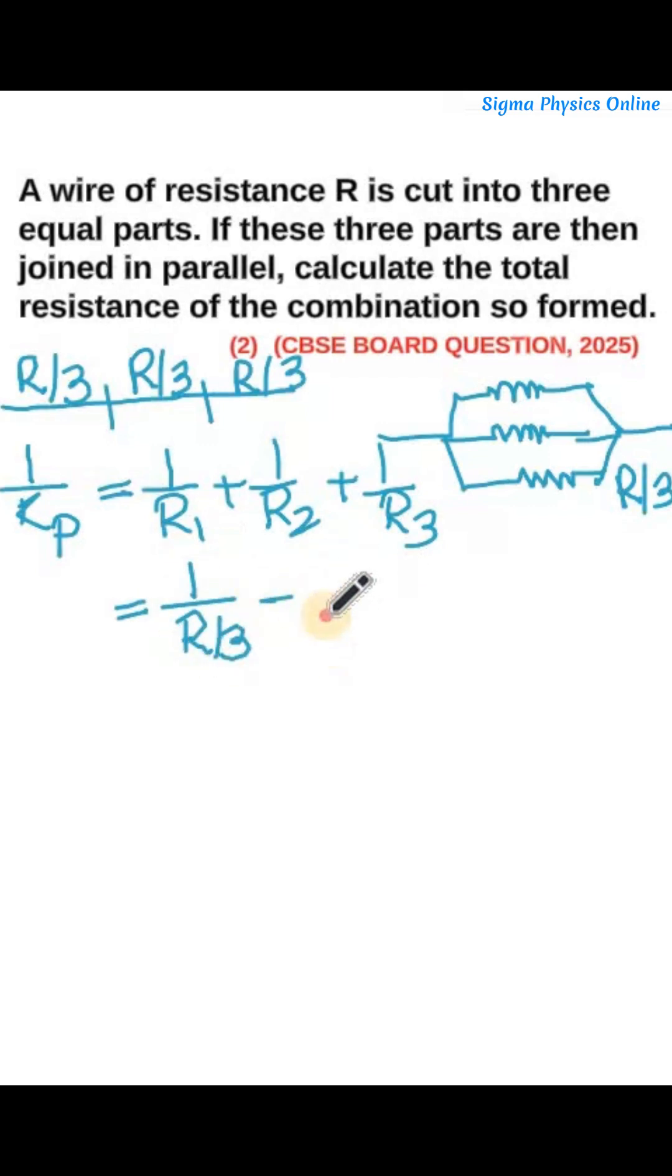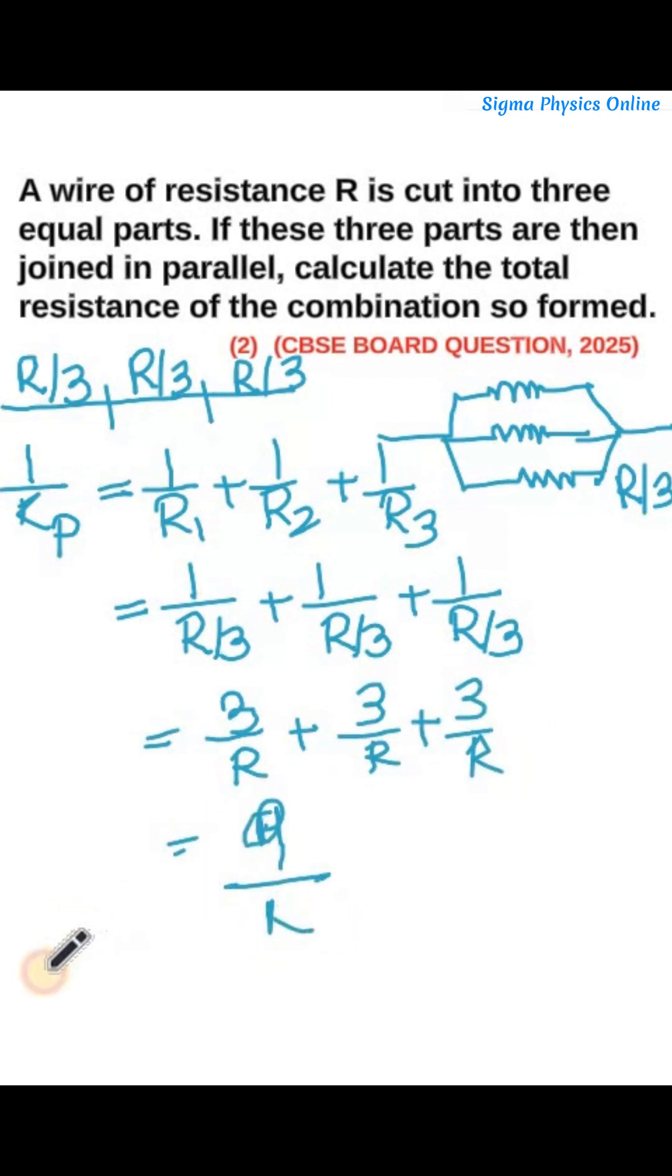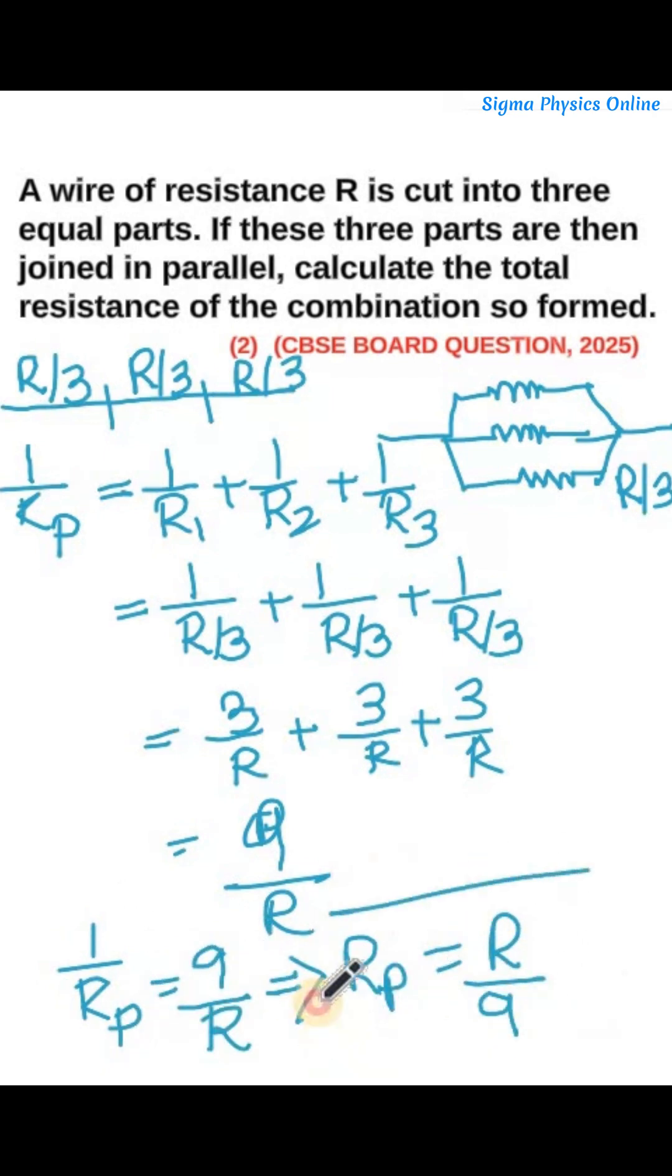Which is 3 by R plus 3 by R plus 3 by R, which is 9 by R. 1 by Rp is 9 by R, which implies Rp is R by 9. So the total resistance of the combination is R by 9.